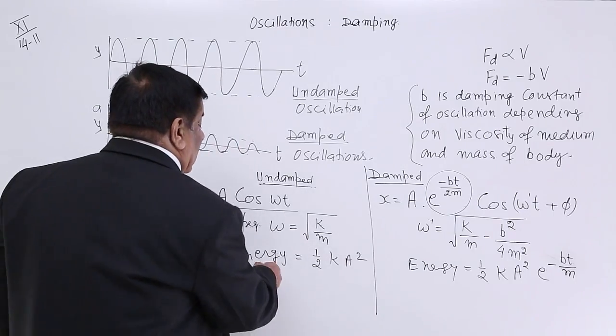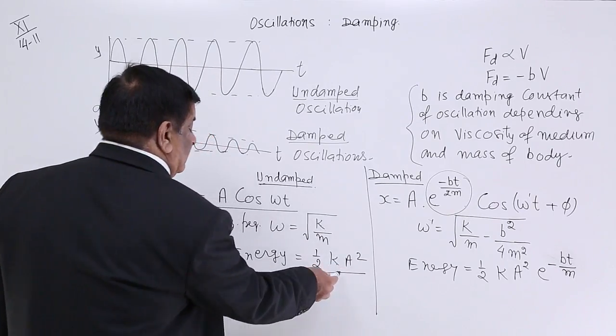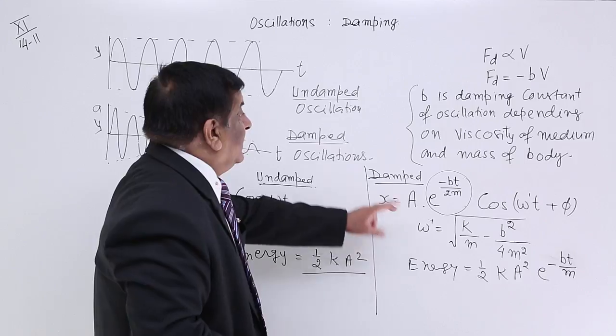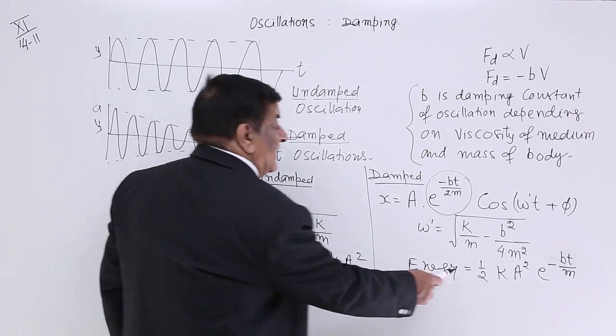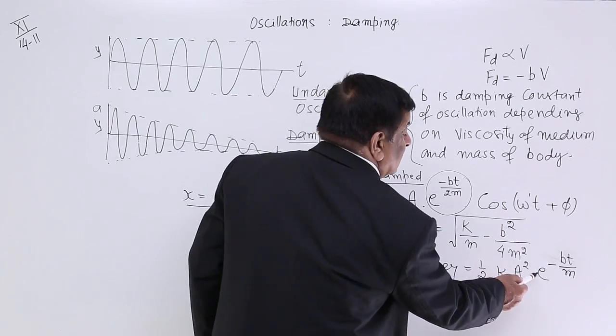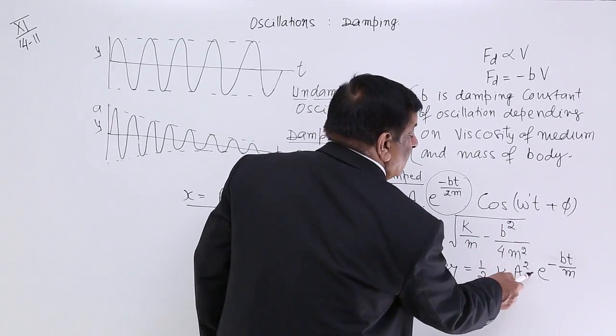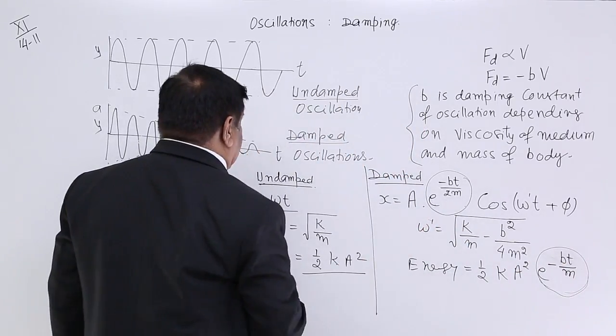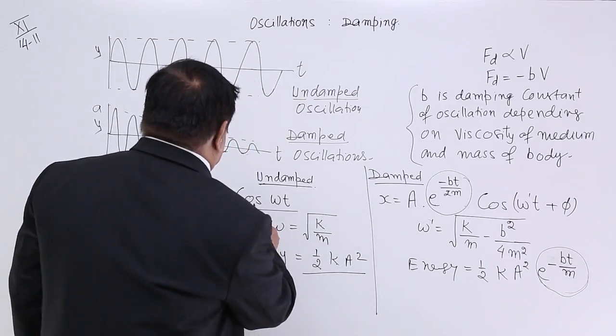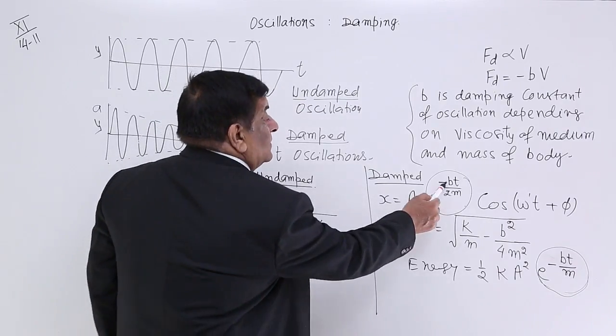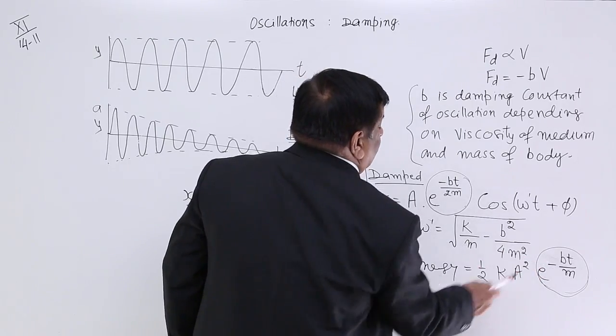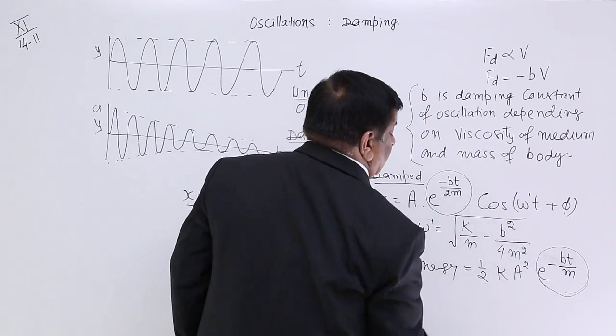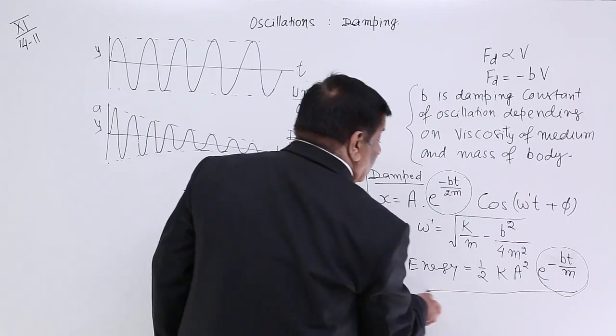So, we have seen amplitude is affected by damping constant. Frequency is affected by damping constant. Amplitude become less and less. Frequency also become less. Then, what happens to energy? Energy is half K A square for the oscillation. This we have done. Now, what is the energy in damped oscillation? Half K A is there but amplitude goes on decreasing. So, in place of A this is multiplied by this factor. Here we have this factor, and double because this is square. So, this two you will not find here. So, this is the new energy in the damped one.